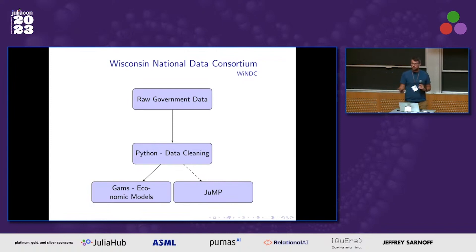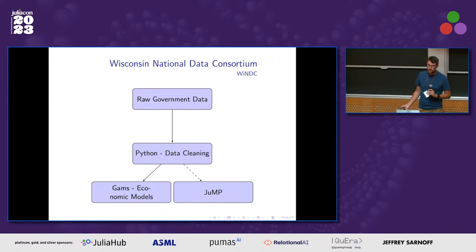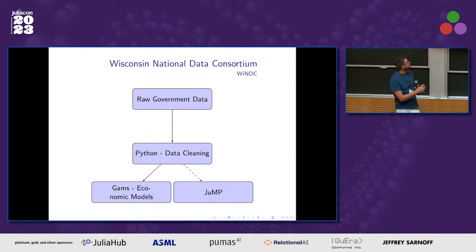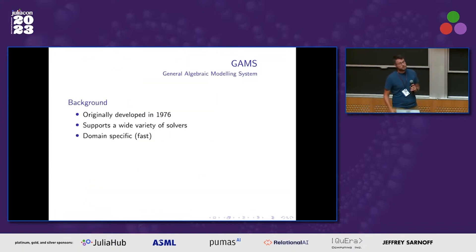Our current workflow: we take raw government data, process it in Python, and currently we throw that into GAMS to create these models. I would like to skip GAMS — and actually skip the Python part as well — because that's kind of the power of Julia: you can do that. I've actually had a lot of success doing this, which is very nice.